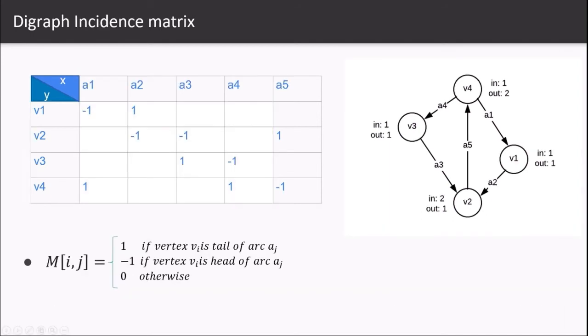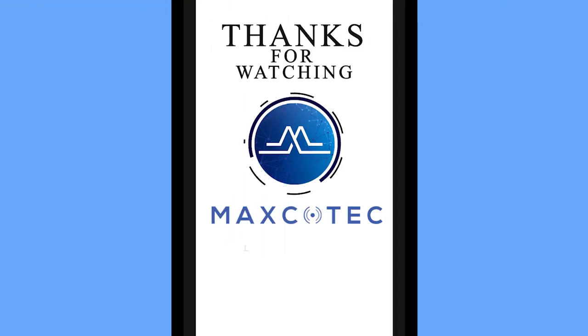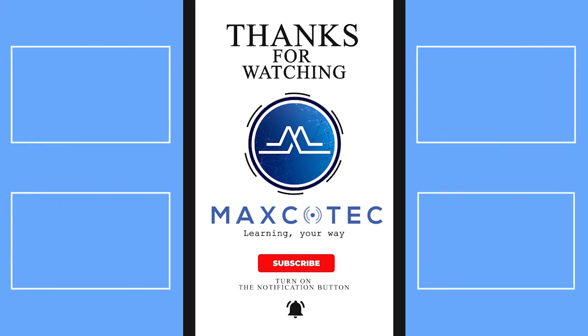Similarly looking at the digraph incidence matrix which is a bit different than the undirected graph, where we mark the box of the matrix 1 if the vertex vi is the tail of arc aj, minus 1 if the vertex vi is the head of the arc aj, zero otherwise. The incidence matrix of digraph cannot capture the loops here and for that reason it is rarely used.